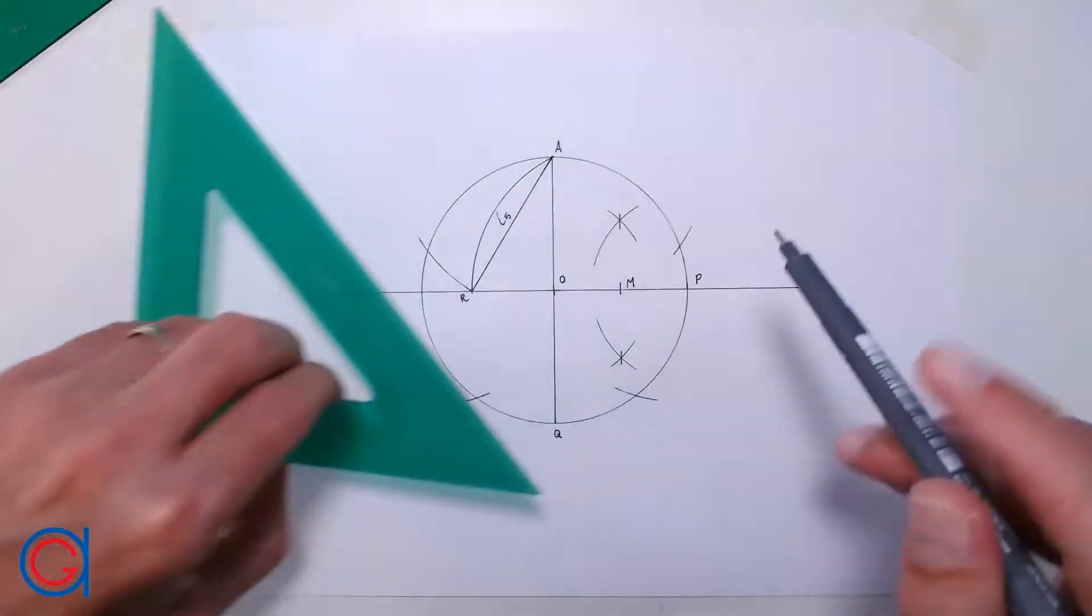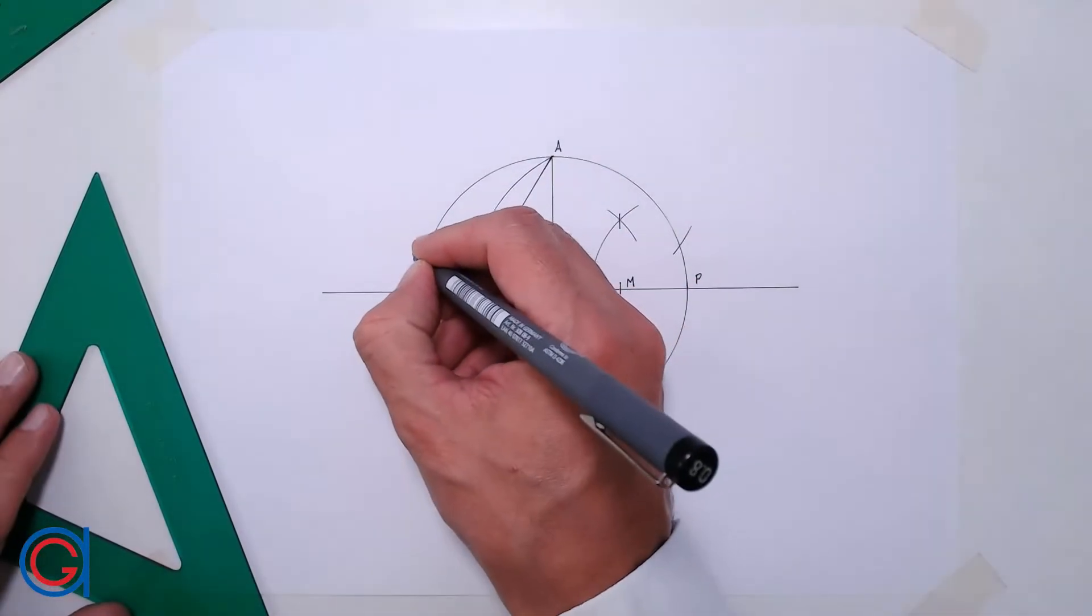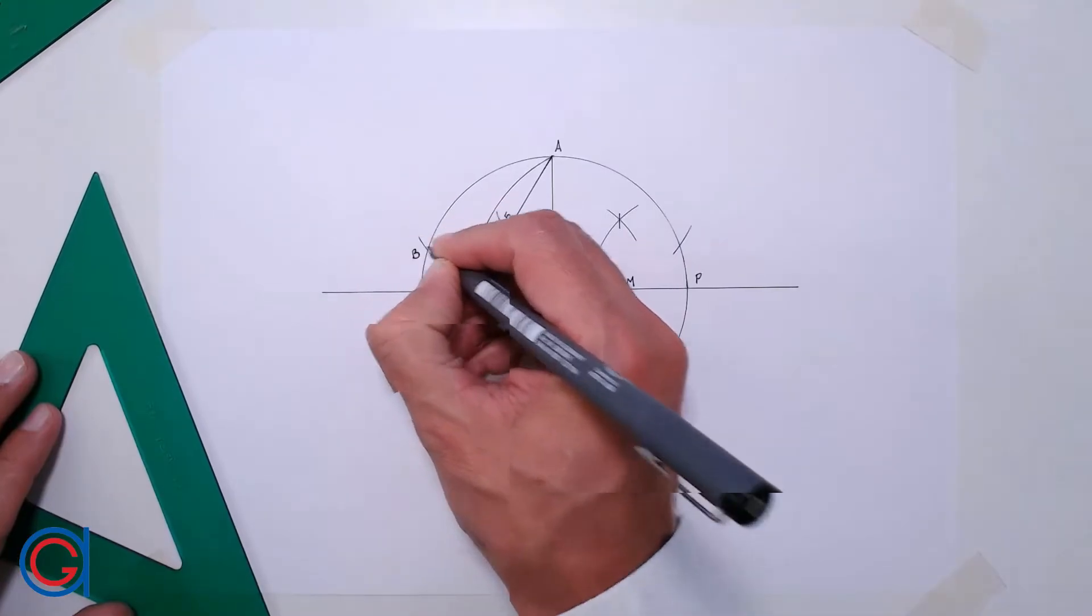So the next step is to name the final four vertices of our pentagon, B, C, D and E.